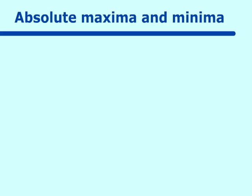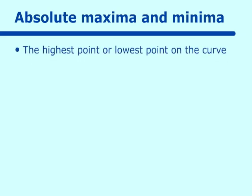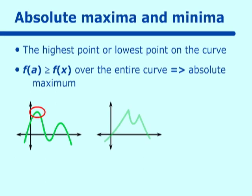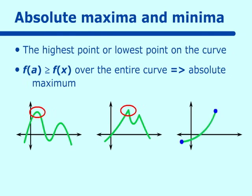Now, absolute maxima and minima are similar to the relative, but what we are looking for is the highest point or the lowest point over the entire curve. If we are looking for the absolute maximum, we want our y value, our f of a, to be greater than or equal to all y values over the entire curve. On a curve with multiple relative maxima, the absolute maximum is the single highest point among all of them. We could also have a curve that increases to some point over an interval, and that point would be the absolute maximum.